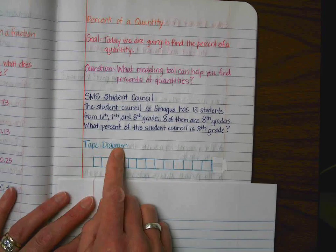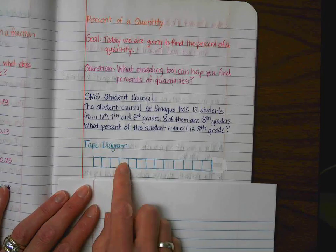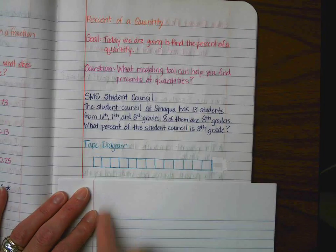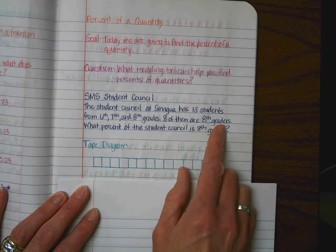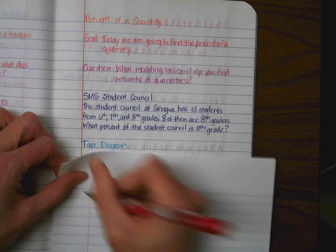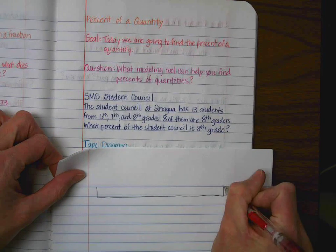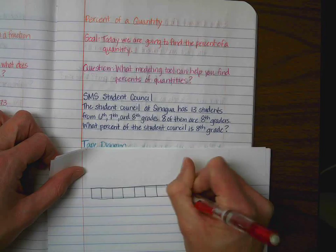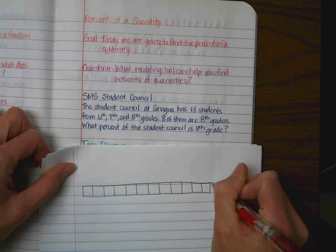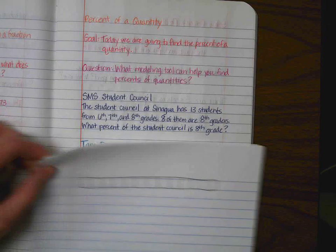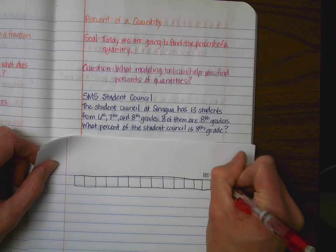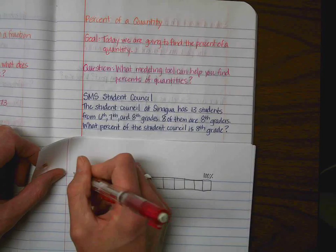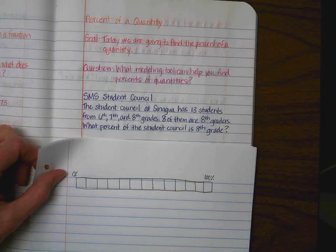So, one of the models that we can use to help us is a tape diagram. So, what I have is, I have 1, 2, 3, 4, 5, 6, 7, 8, 9, 10, 11, 12, 13. So, we have 13 students in the Sonawa Student Council, 8 of them are 8th graders. So, what we are going to do is, we are going to look at this tape diagram. I am going to draw another one right here so I can actually manipulate it. So, we have 1, 2, 3, 4, 5, 6, 7, 8, 9, 10, 11, 12, 13. So, we know that this is the 13th box. So, this would represent all of the students, this box. If we went from here to here, that's all of them, right? If we hadn't even started, then we would know right here is 0%. Does everybody see what we are doing?